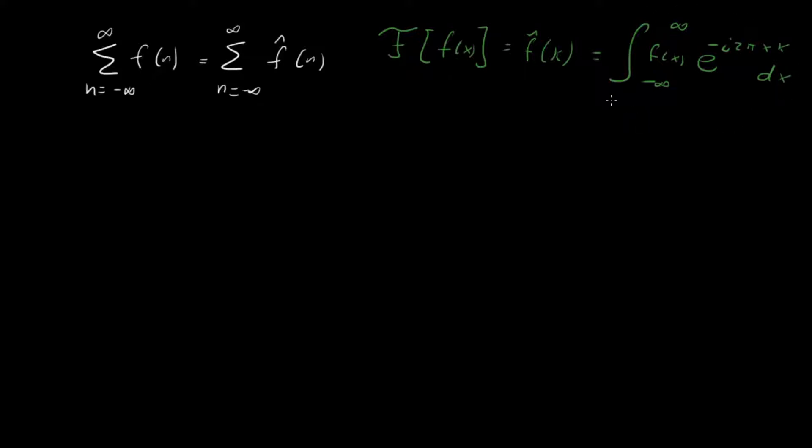So this is similar to the Fourier transform that I mostly use except that we have this 2 pi in the exponential. But this is the transform that we need in order for this property to come out.